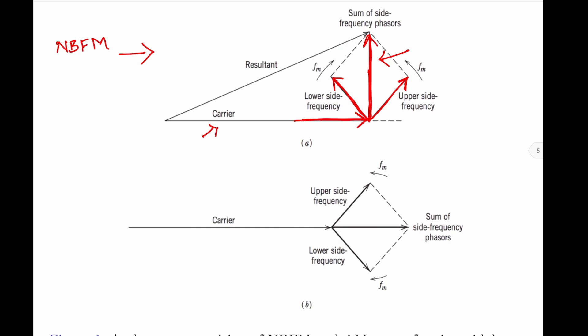The effect of this 90-degree phase difference between the carrier and the sum of the frequency phasors is to produce a resultant phasor that represents the narrow band FM signal — approximately the same amplitude as the carrier but out of phase with it. So in narrow band FM, the amplitude of S(t) is approximately equal to the amplitude of the carrier C(t), and S(t) and C(t) are out of phase with each other.